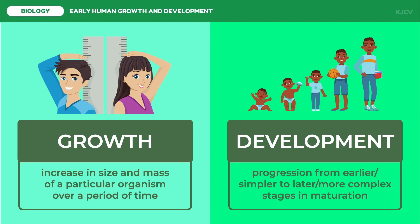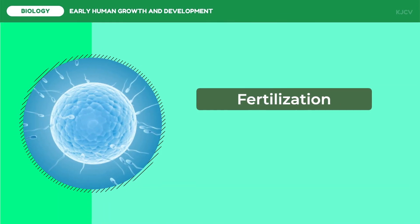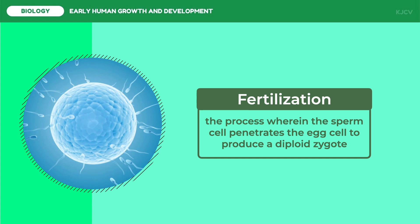Prenatal growth and development starts with fertilization, which is the process wherein the sperm cell penetrates the egg cell to produce a diploid zygote. The sperm and egg cells are both haploid cells, meaning each sex cell only contains 23 chromosomes. Fusion of these sex cells leads to a diploid number of 46 chromosomes.